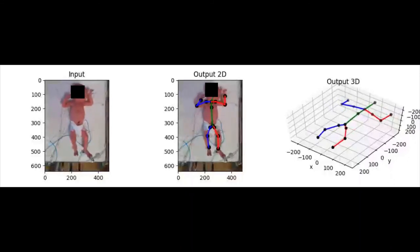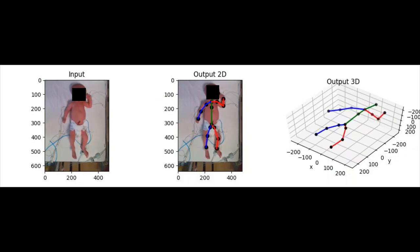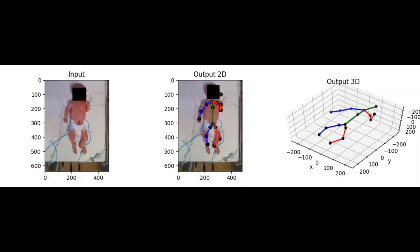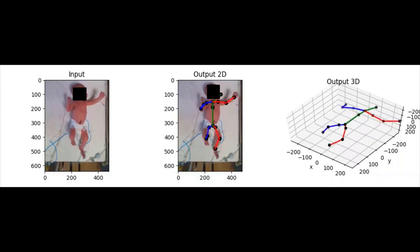Although the model has only been fine-tuned on a synthetic infant dataset, experimentation into the ability of the model to generalize to real data has been undertaken. The Mahavia project at Imperial College has collected a real infant dataset. However, the 3D ground truths are corrupted and the 2D ground truths are missing the central spine key points. Therefore, fine-tuning on this dataset is not currently possible. Inference can still be conducted though, and is visualized in the video currently being shown.